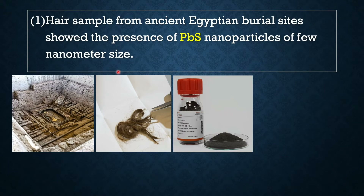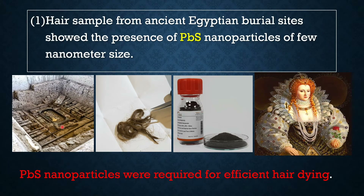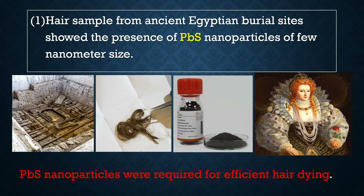Why did they use lead sulfide nanoparticles? They used lead sulfide nanoparticles to color their hair, because these nanoparticles were required for efficient hair dyeing. You can see in this portrait as well — the hair is so colorful, and that is all because of lead sulfide nanoparticles. So ancient people used lead sulfide nanoparticles for coloring their hair.